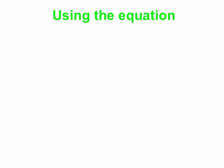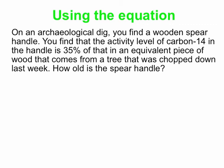So let's use this equation, see how we use this equation here. So here's an example. You're on an archeological dig, and you dig up a wooden spear handle. You find the activity level of carbon-14 in the handle is 35% of that in an equivalent piece of wood that comes from a tree that was chopped down just last week. How old is your spear handle? So we're going to make one major assumption. It turns out not to be that bad, but our assumption is that the ratio of carbon-14 to regular carbon in the atmosphere has stayed fixed over time. Now, if you were really doing an accurate measurement, you would correct for everything we know about carbon-14, about its historical ratio. But for now, we'll just pretend that it was steady over time.